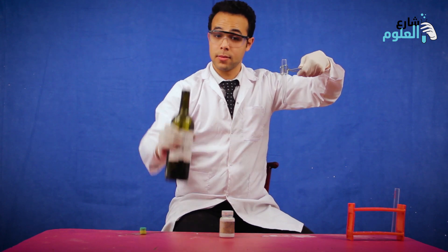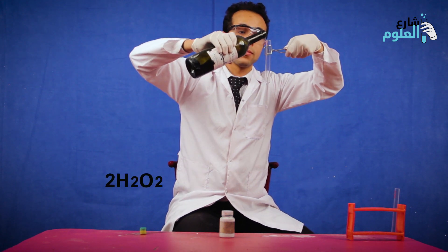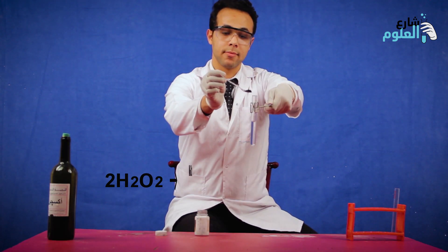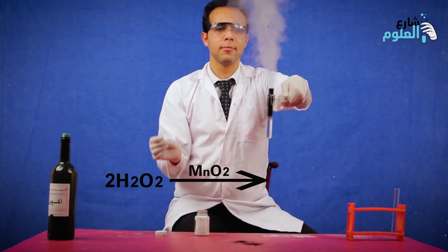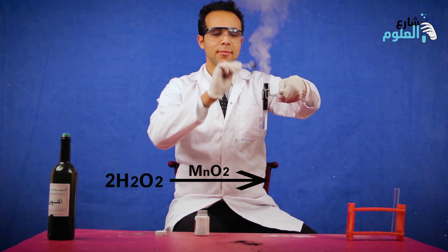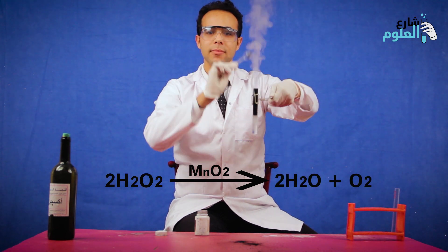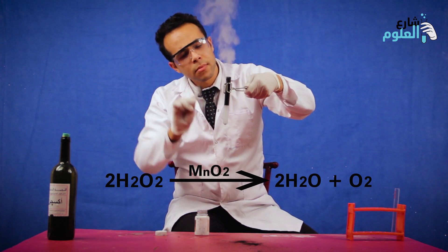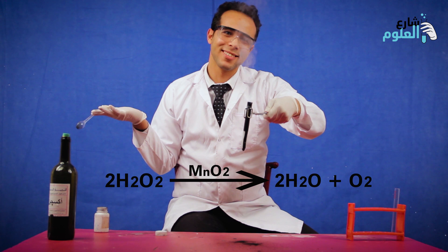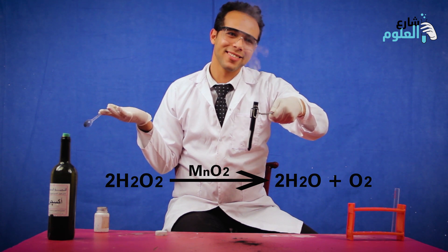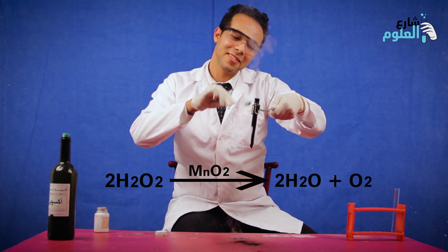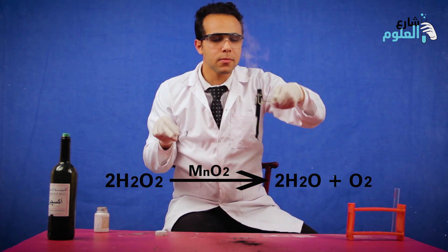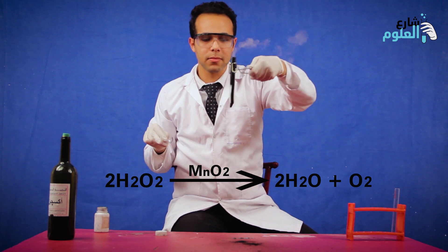What will happen? First, we will put a small amount of hydrogen peroxide in the container, then we will add the catalyst, and we will observe what happens. As you can see, we get a very good release of oxygen from the hydrogen peroxide. The oxygen comes out because the catalyst breaks down the hydrogen peroxide and releases it.